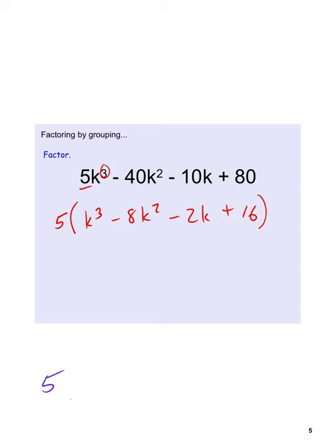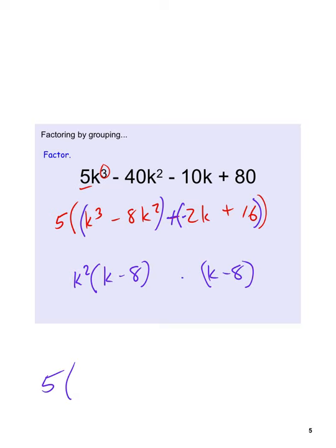The 5 stays along for the ride. Now we group what's inside the parentheses: k cubed minus 8k squared plus a negative 2k plus 16. From the first group, the greatest common factor is k squared, leaving k minus 8. For the second group, we pull out a negative 2 to get k minus 8 as well — since negative 2 times k is negative 2k, and negative 2 times negative 8 is positive 16.